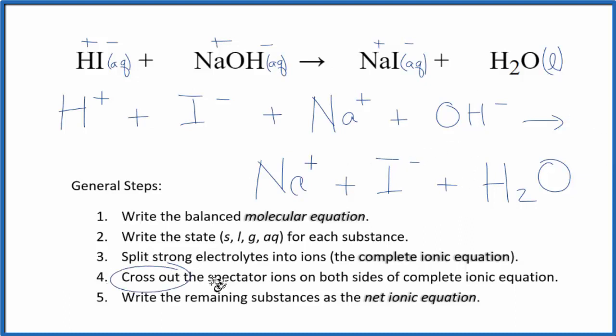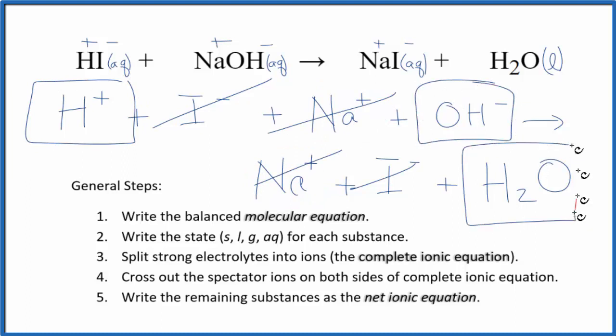Next, we'll cross out spectator ions. They're on both sides of this complete ionic equation. They haven't changed, so we're really not interested in them. We have the iodide ion here in the reactants and in the products. Let's just cross that out. The sodium ion, cross that out. And what's left, this is the net ionic equation for HI plus NaOH. I'll clean it up and write the states in, and we'll have our net ionic equation.